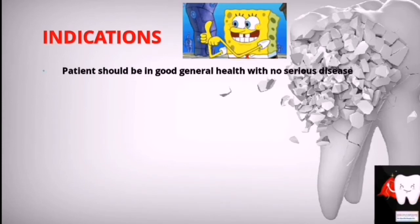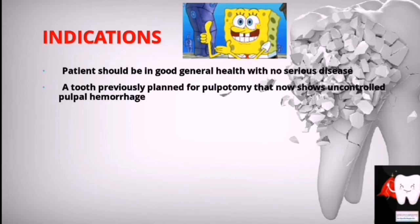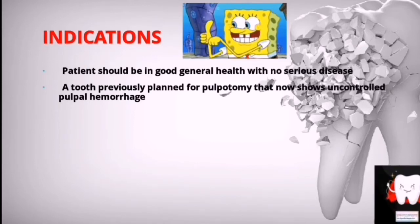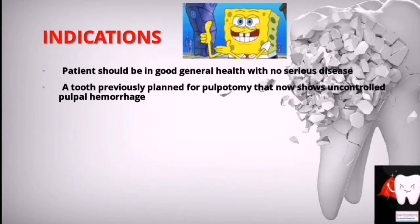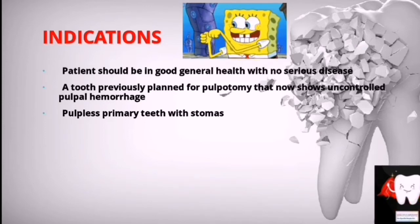Now let's see what are the indications of pulpectomy. First, the patient should be in good general health with no serious disease. Second, it should be a tooth which was previously planned for pulpotomy but is now showing uncontrolled pulpal hemorrhage, so you have decided to do a pulpectomy.